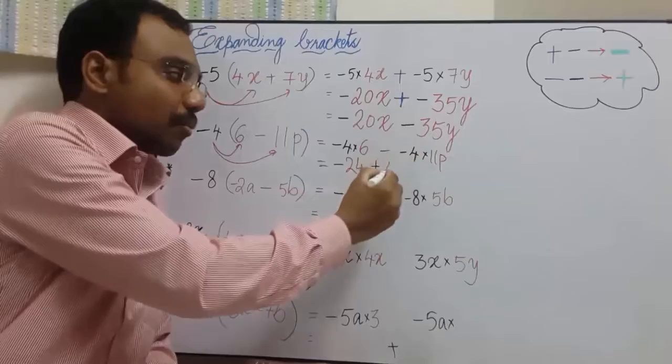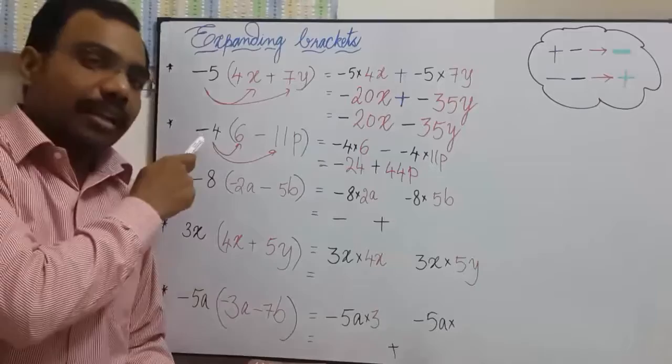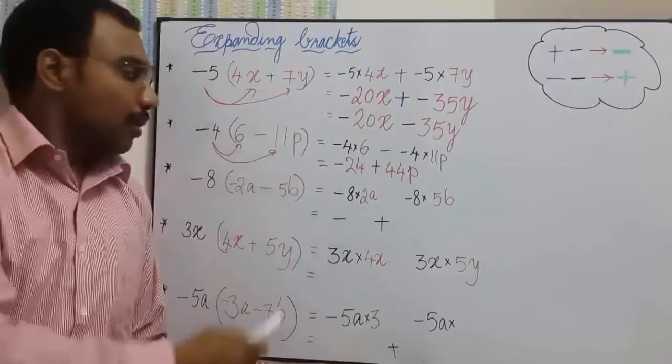Observe this. In this example, 6 is a positive number whereas 11p is a negative number. Now when you are multiplying with a negative number, the sign of this number has become negative. Finally, this number has become negative. So 6 has become negative 24. And similarly, this negative number has become positive.